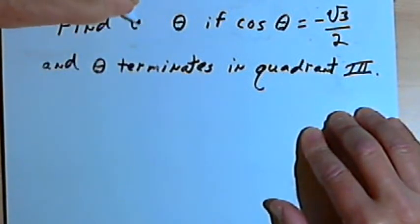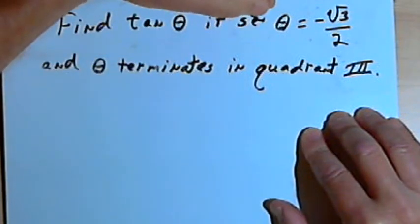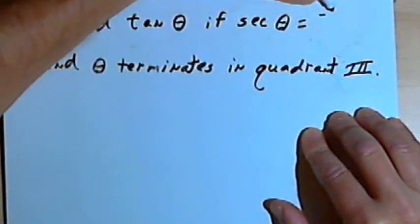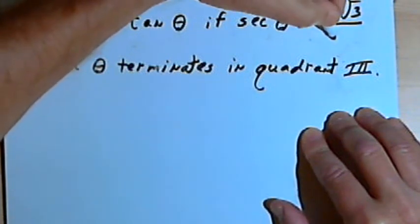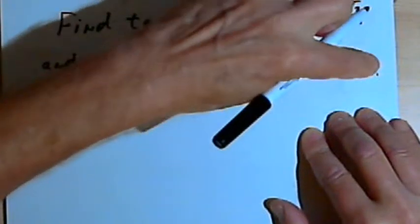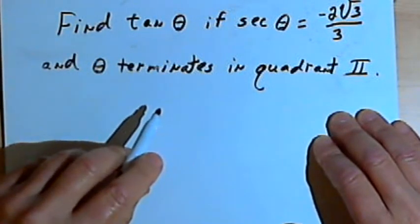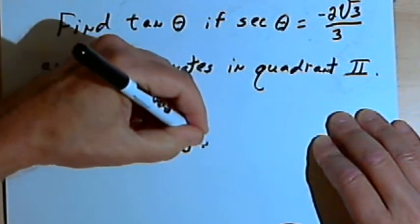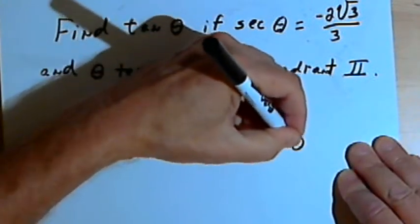Find the tangent of theta if the secant of theta equals negative 2 times the square root of 3 over 3, and theta terminates in quadrant 2. The Pythagorean identity we want is the one that says tangent squared of theta plus 1 equals the secant squared of theta.